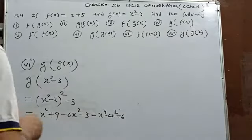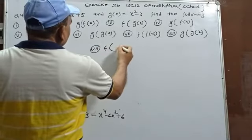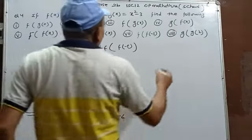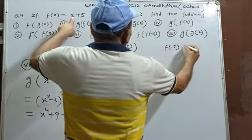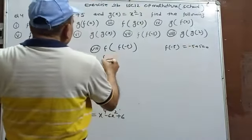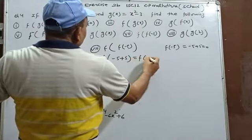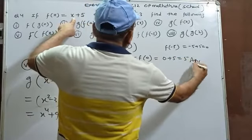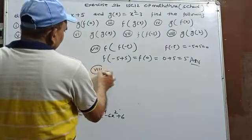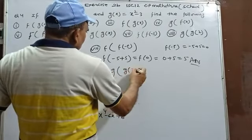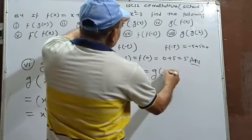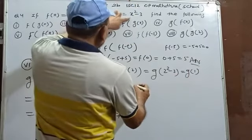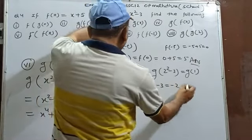Question 4's seventh part: f(f(-5)). f(x)=x+5, so f(-5)=-5+5=0, then f(0)=0+5=5. Also g(f(4))=g(4+5)=g(9)... wait, checking: 4-3=1, g(1)=1²-3=-2.